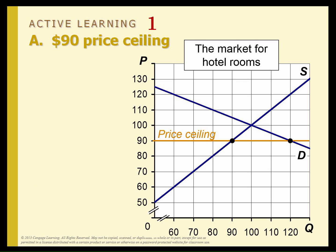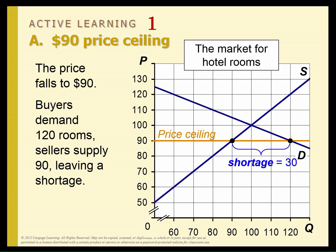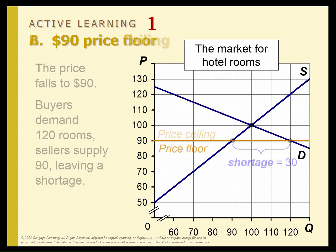A $90 price ceiling — this is binding. So the price falls to $90 and there's a shortage. Only 90 hotel rooms are being supplied. The equilibrium here is quantity 90 and price $90. But look how many more people want hotel rooms, so there's a lot of people who don't get them. There's a shortage.